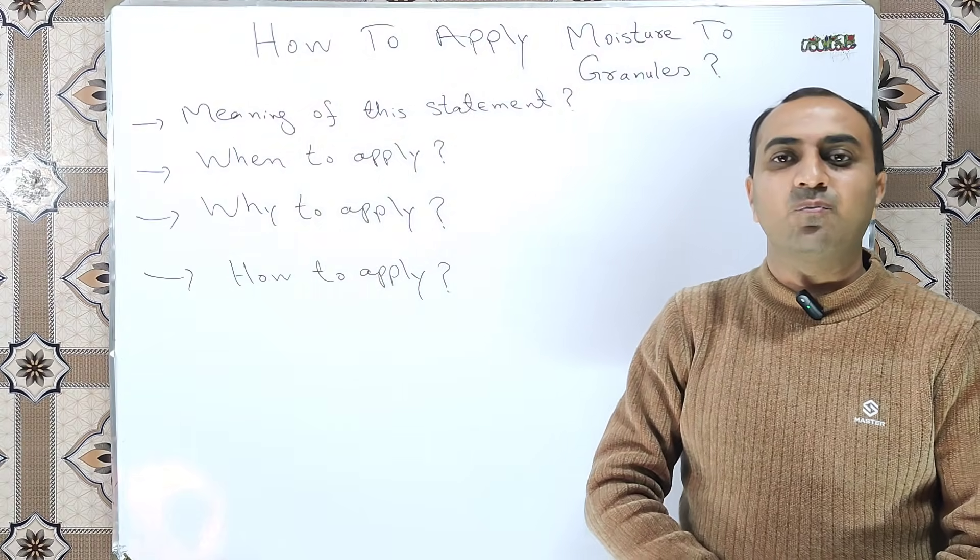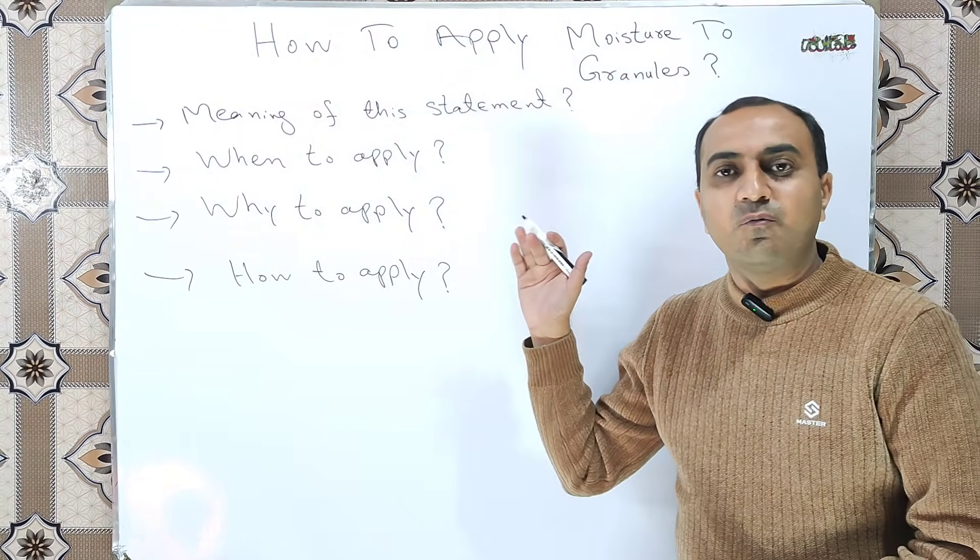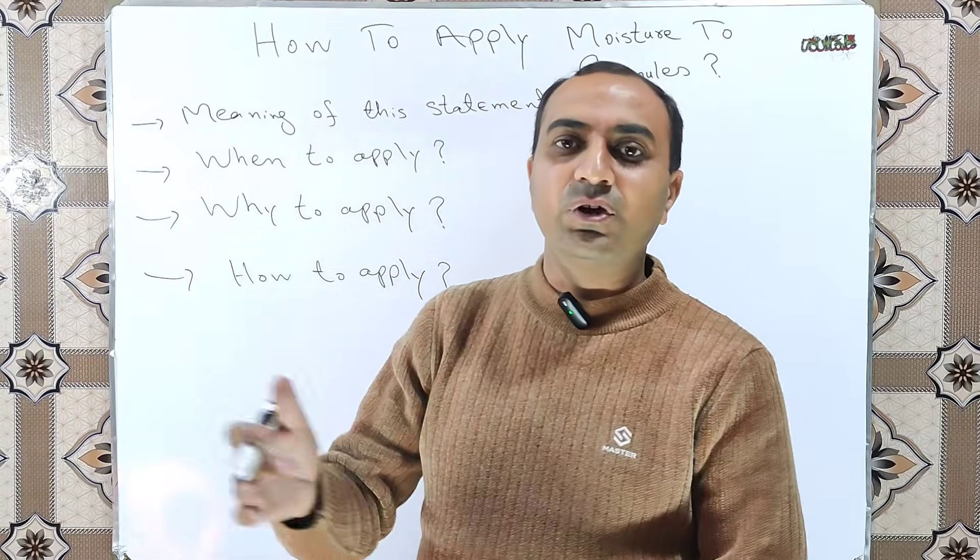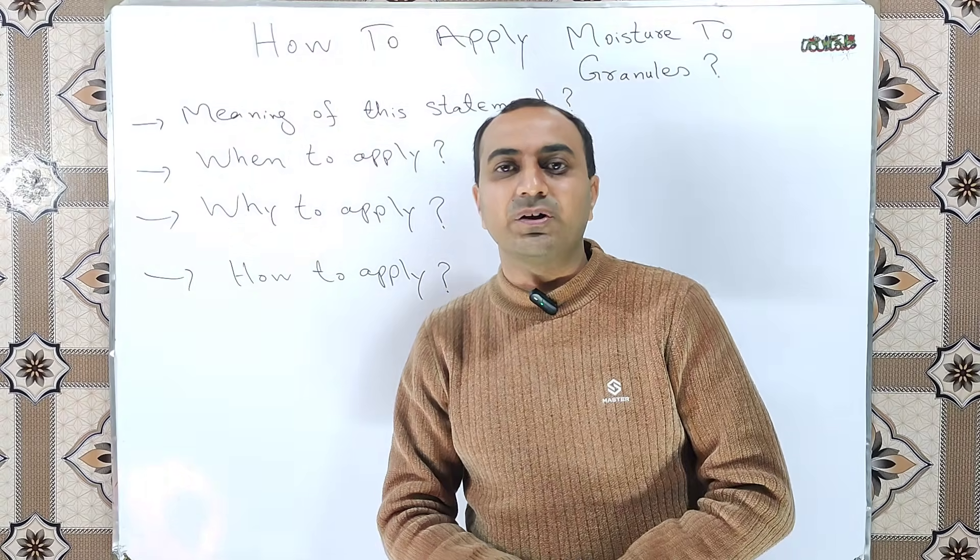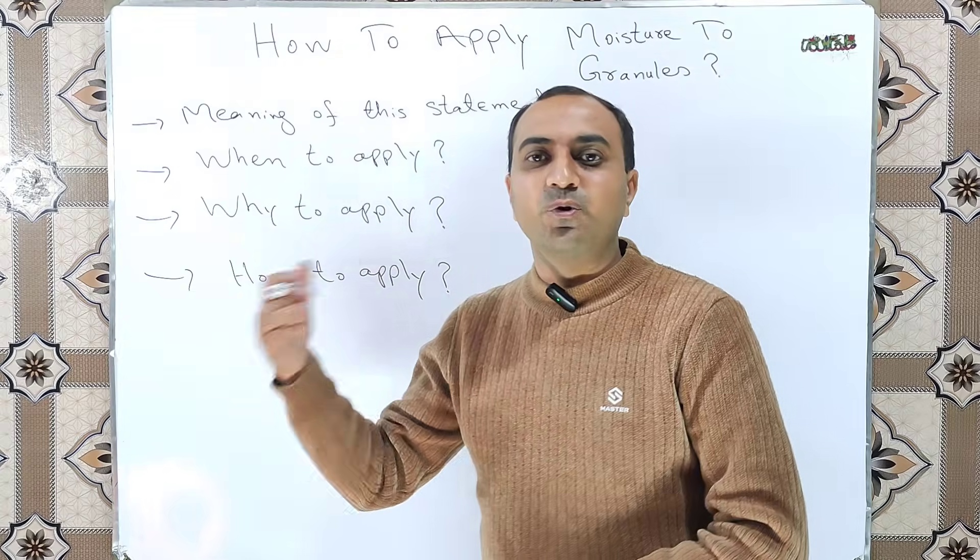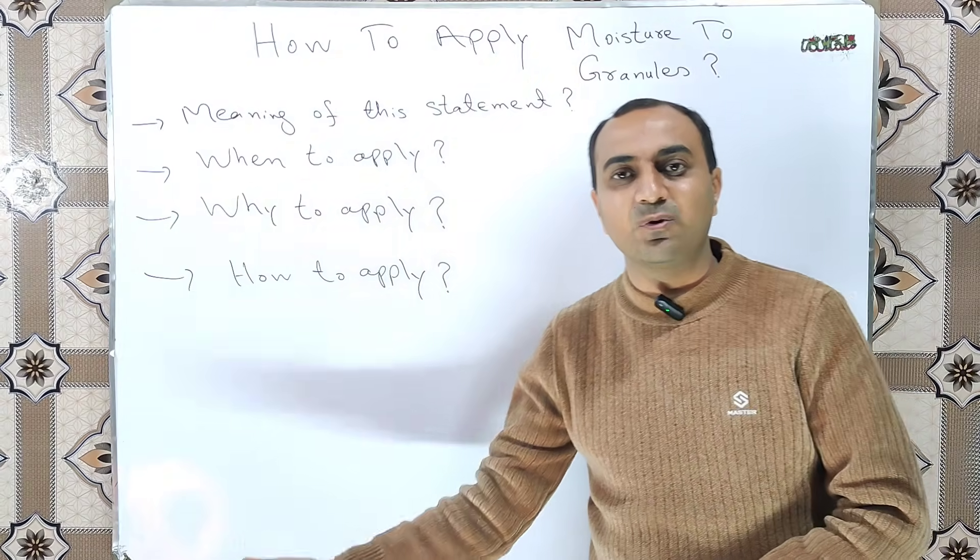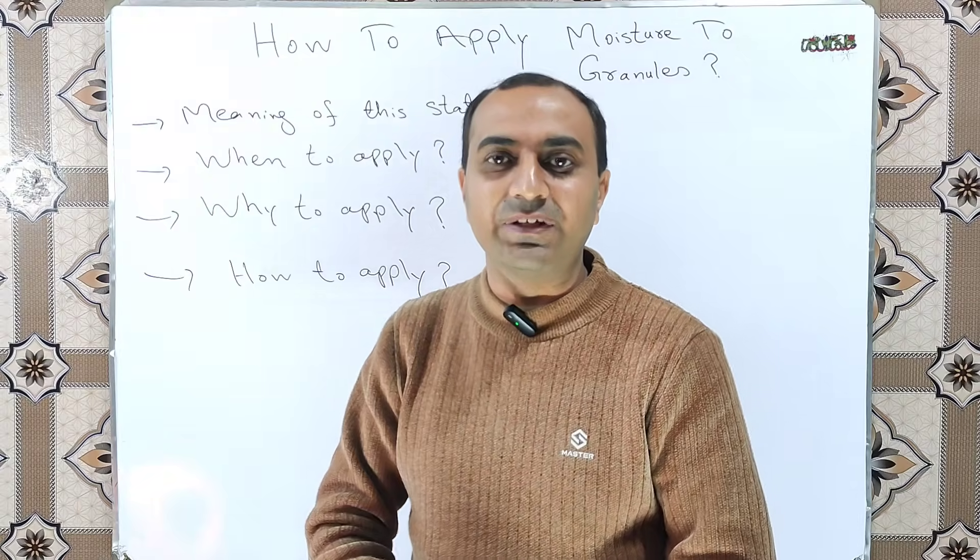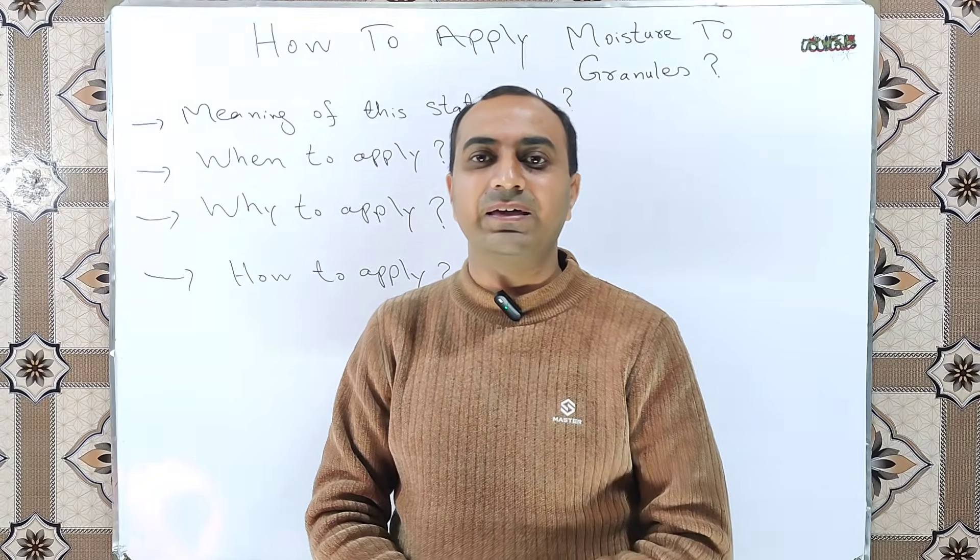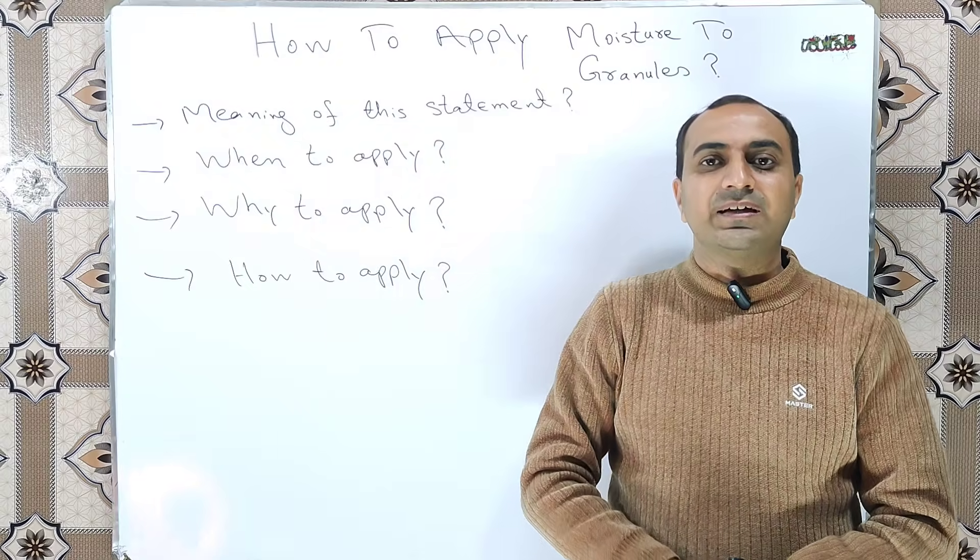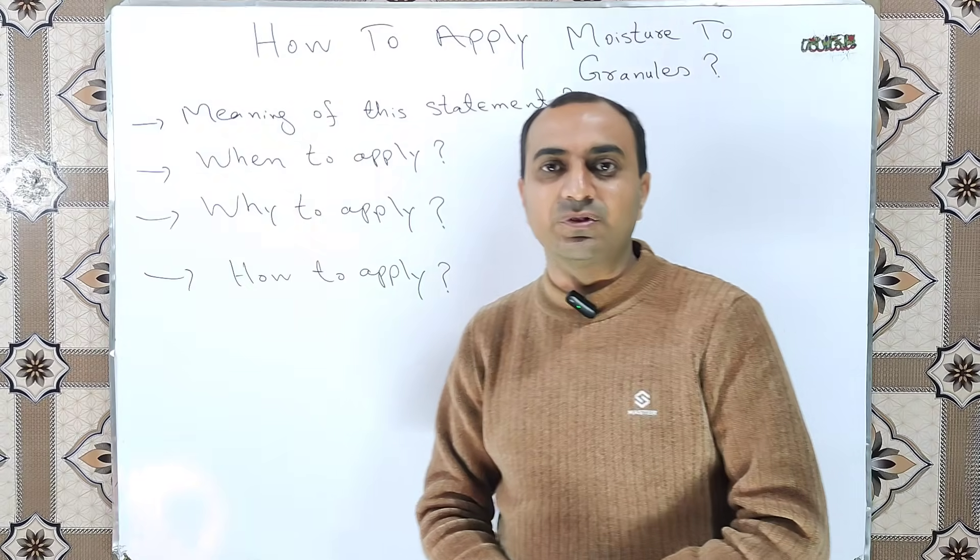So how to apply the moisture or how we can moisten our granules? For this, we take some quantity of our product. Suppose that we have a bag size of 50 kg and we will take 10 kg from this 50 kg batch and will apply a suitable quantity of solvent to this 10 kg of the granules.